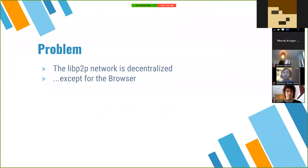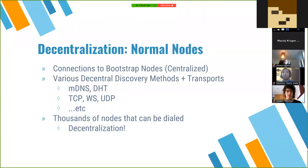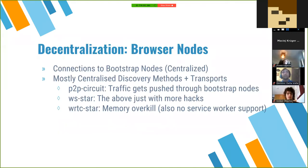Currently the libp2p network is very decentralized, but the browser isn't. In a normal node there are decentralized bootstrap nodes, and the node also uses various methods such as MDNS or DHT, and dials over various transports — TCP, web circuits, and UDP — meaning thousands of nodes can be dialed. But in the browser, besides bootstrap nodes, there's only p2p circuit which pushes traffic through the bootstrap nodes, and web circuit star which is the hack that existed before p2p circuit, and web RTC star which seems to kill the browser by using too much memory.